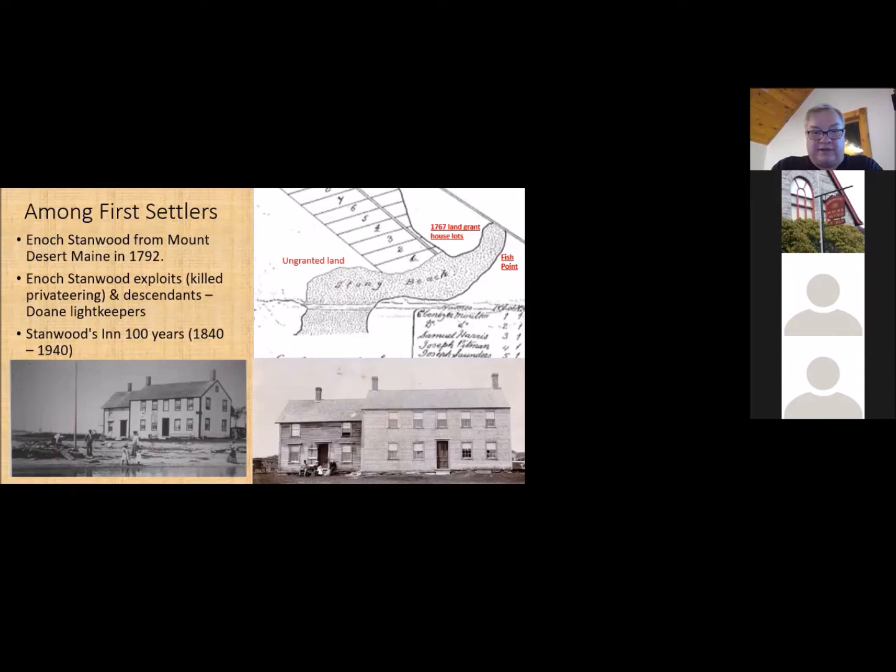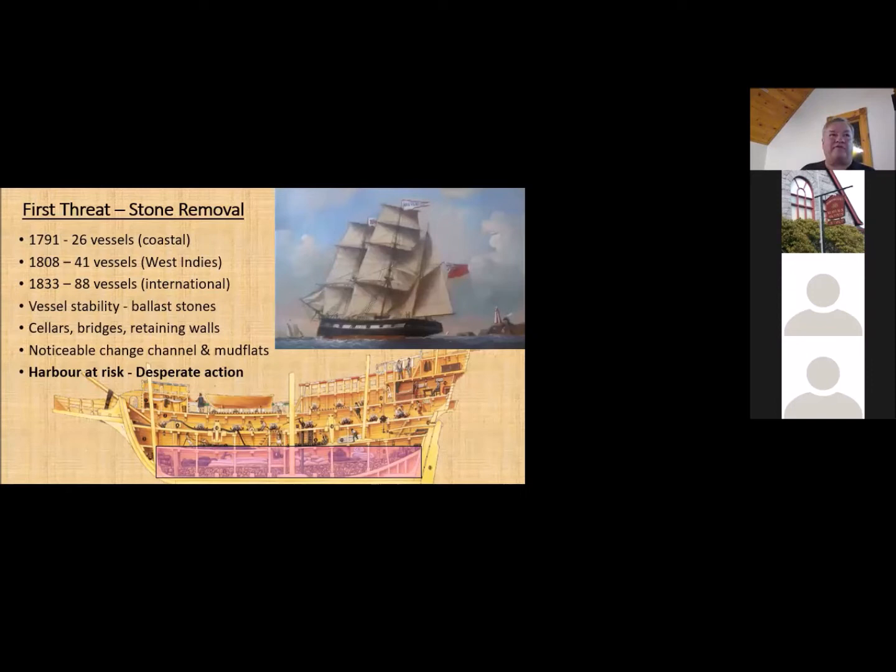The first threat that the Yarmouth Bar faced was not from the sea, but from man, from ourselves. Yarmouth Bar was made up of great big, nice, smooth, round beach stones. Those beach stones for the early settlers, they were great construction materials for building cellars, for even building bridges. But as well, they were used as ballast in the bottom of ships. Ships, when they were empty, in order to be stable in the water, they'd have to add ballast. Often these ships leaving Yarmouth would be leaving empty because they'd be picking up cargoes in other ports. Well, all of this was really threatening the bar.